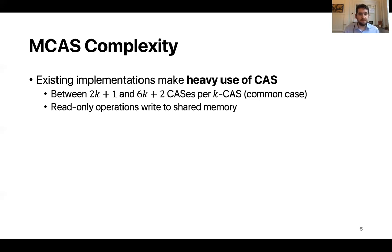Existing software implementations of MCAS are typically based on single word comparison and they make heavy use of compare and swap. More precisely, existing implementations use between 2k plus 1 and 6k plus 2 compare and swap instructions for a k word MCAS in the common uncontended case. Of course if there is contention the complexity can grow even higher due to restarts or helping. Another characteristic of existing implementations is that read-only operations often have to write to shared memory even if there is no contention.